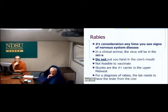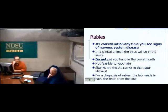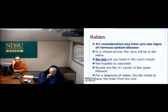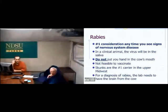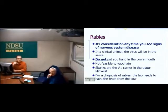I have to mention rabies — North Dakota has plenty of it, and skunks are the number one carrier in the upper Midwest. Anytime you see an animal demonstrating signs of nervous system trouble, you have to think about rabies first. If animals look like they're having trouble chewing or swallowing, do not stick your hand in their mouth. I've had many cases come into the diagnostic lab where people have done just that and then had to get prophylactic treatment. Always keep it in the back of your mind — the surprise cases are the ones where you think it can't be rabies, and it turns out it is.